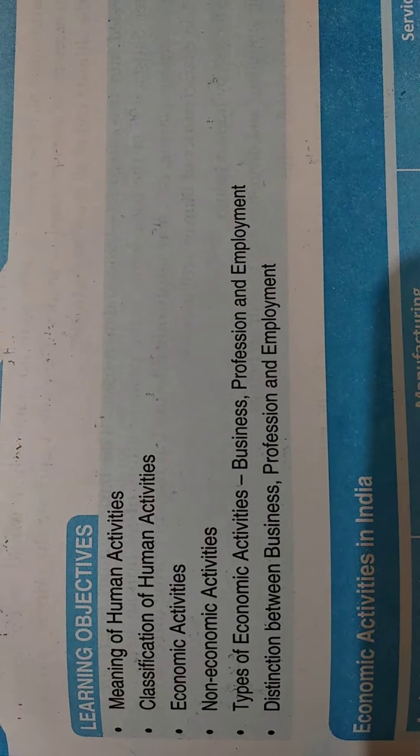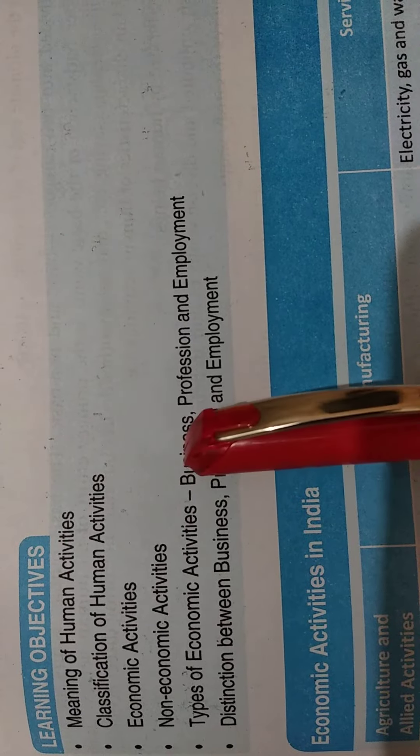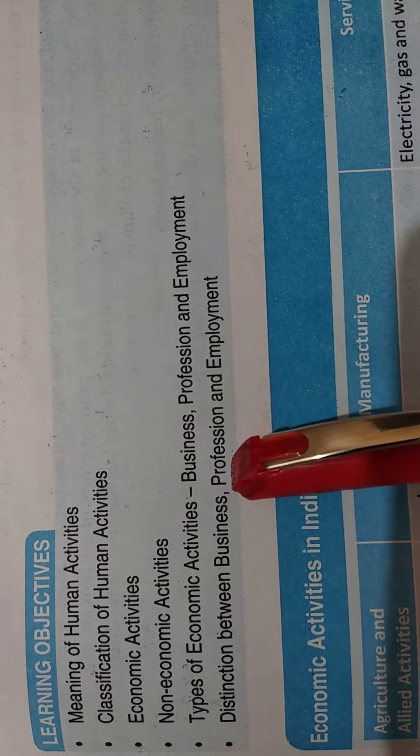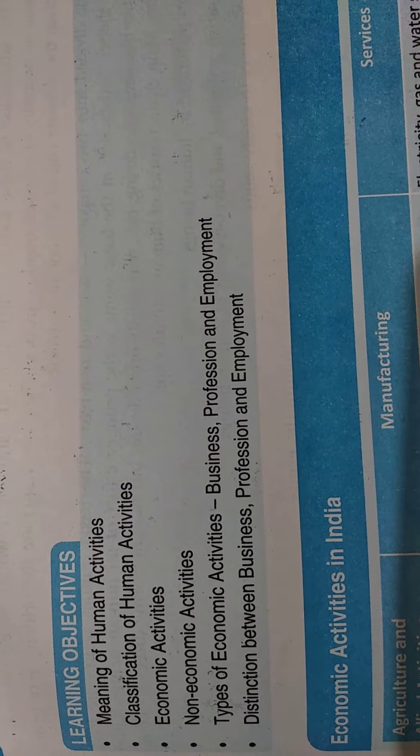Our learning objective is: what are human activities? Number one, classification of human activities. It can be classified in two ways — economic and non-economic. So what are economic activities? What are non-economic activities? This we are going to study here first.